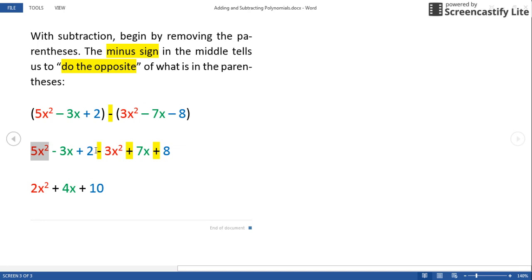5x² minus 3x² will give me 2 of the x squares. A -3x and a +7x together make positive 4x, keeping the sign of the larger thing.